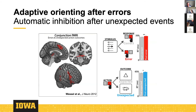This all goes back to a study from the end of my graduate school, where we ran a conjunction fMRI analysis between action errors and correctly performed actions that didn't produce the expected outcome. In both cases you get a suboptimal outcome, but in one case it's due to an error, and in the other the environment behaves unexpectedly. The common network activated following both types of events includes pre-SMA, right inferior frontal cortex, and the subthalamic nucleus — the inhibition network.